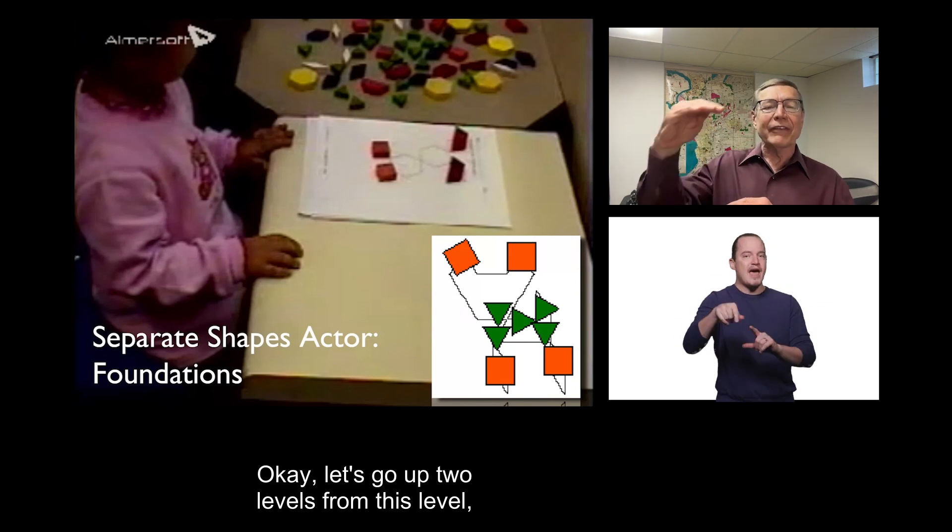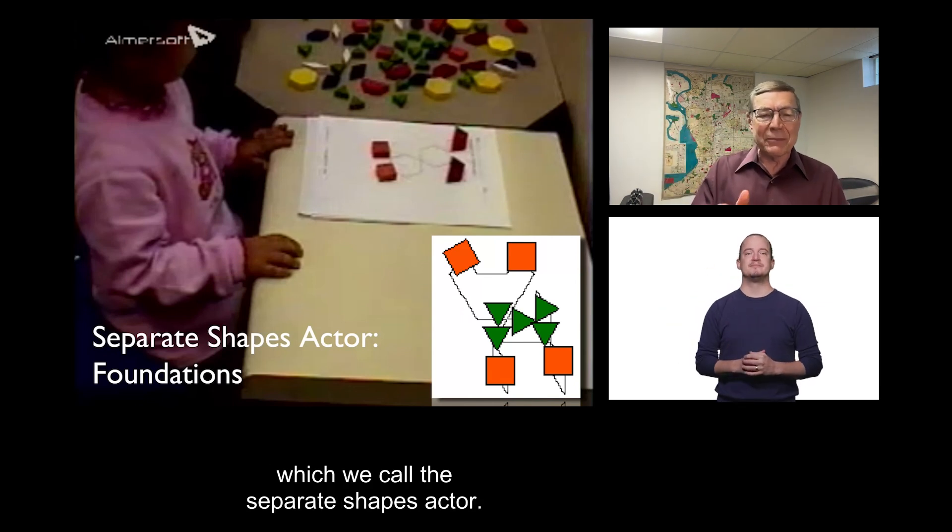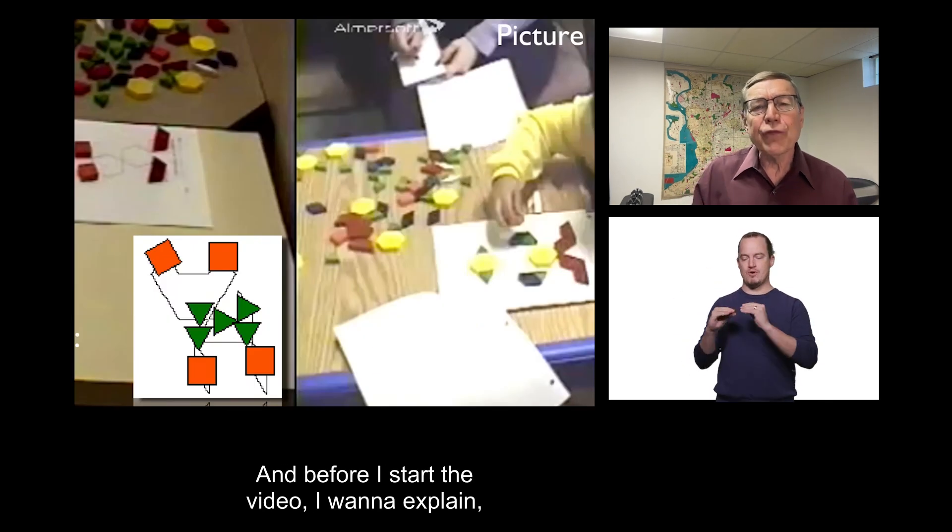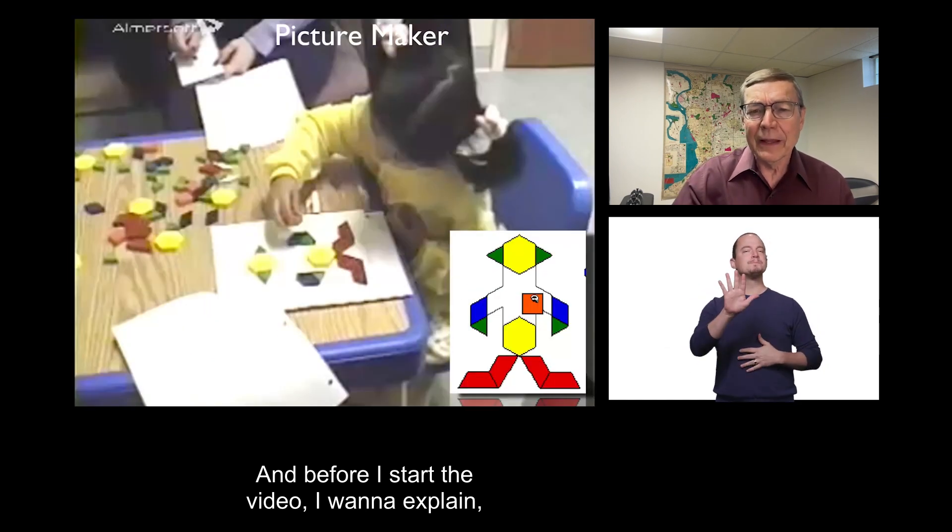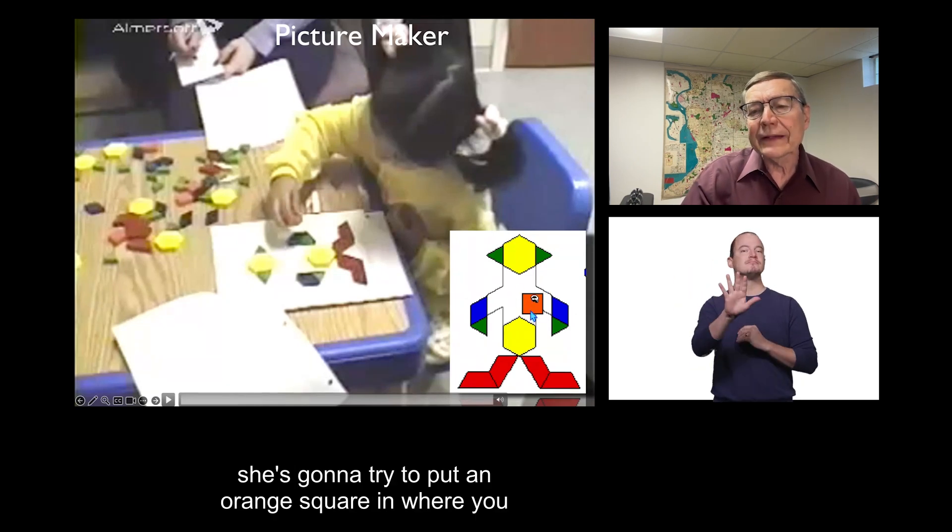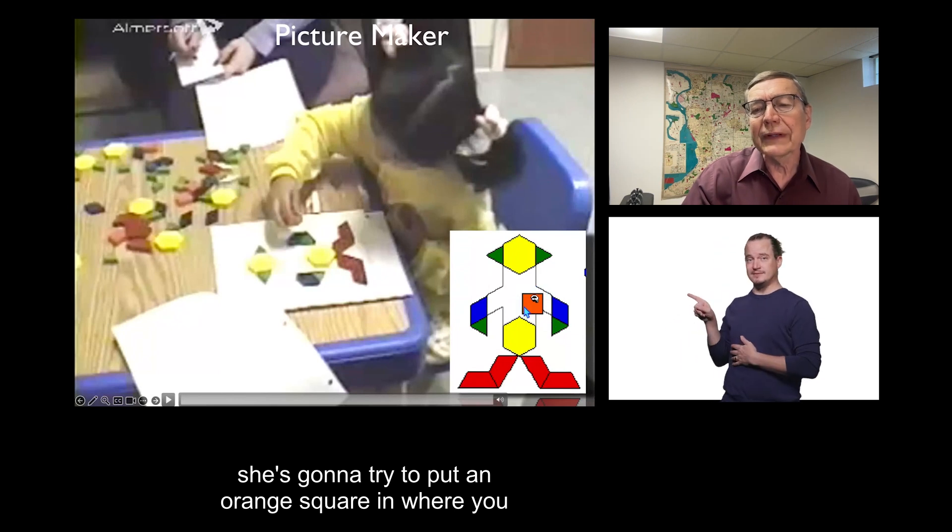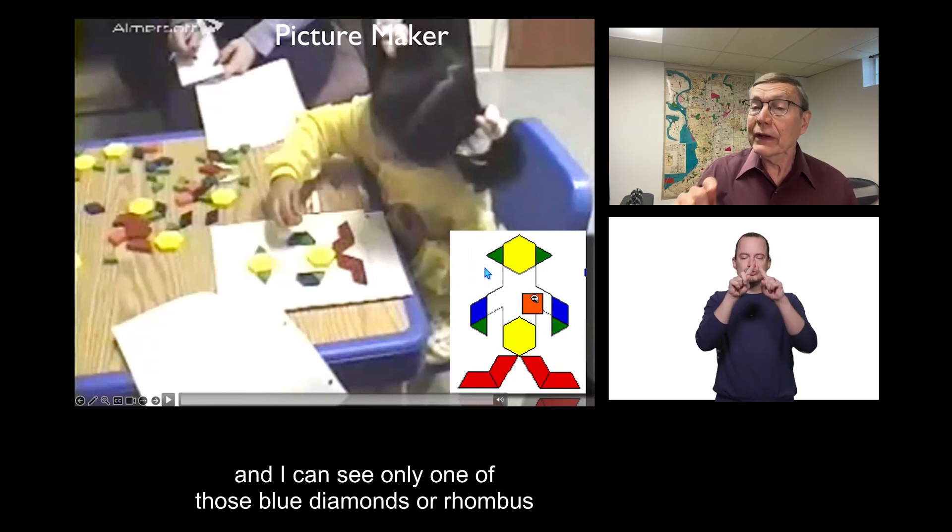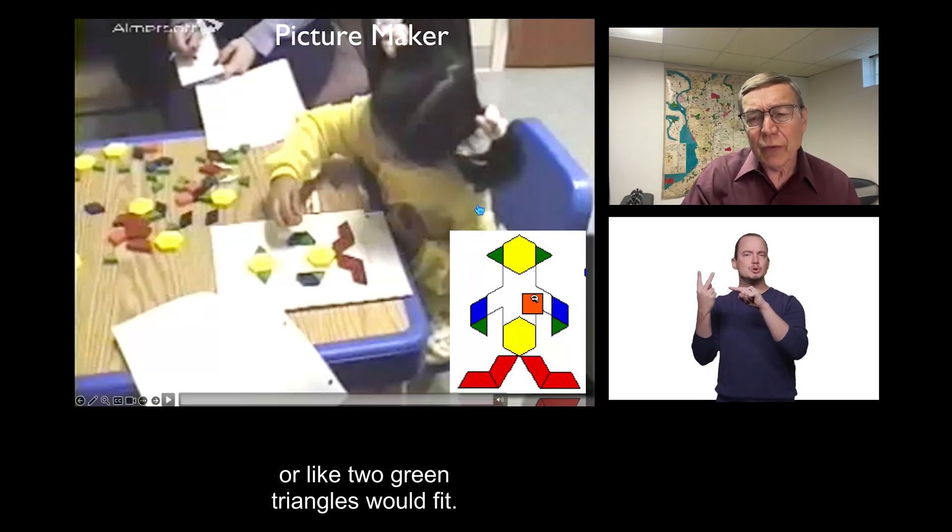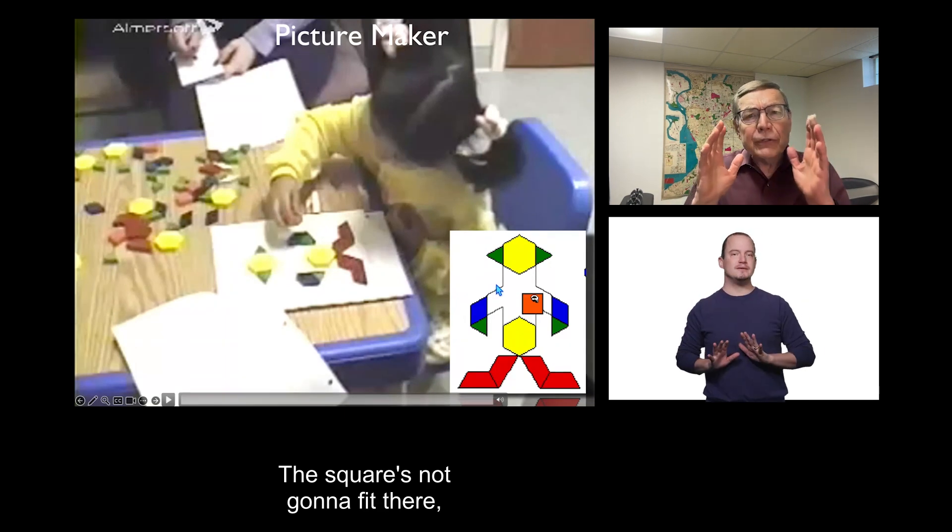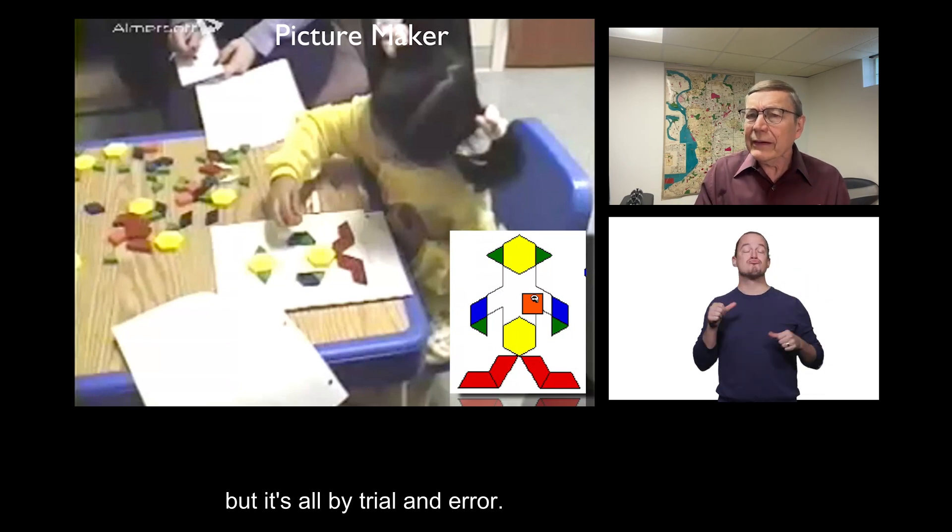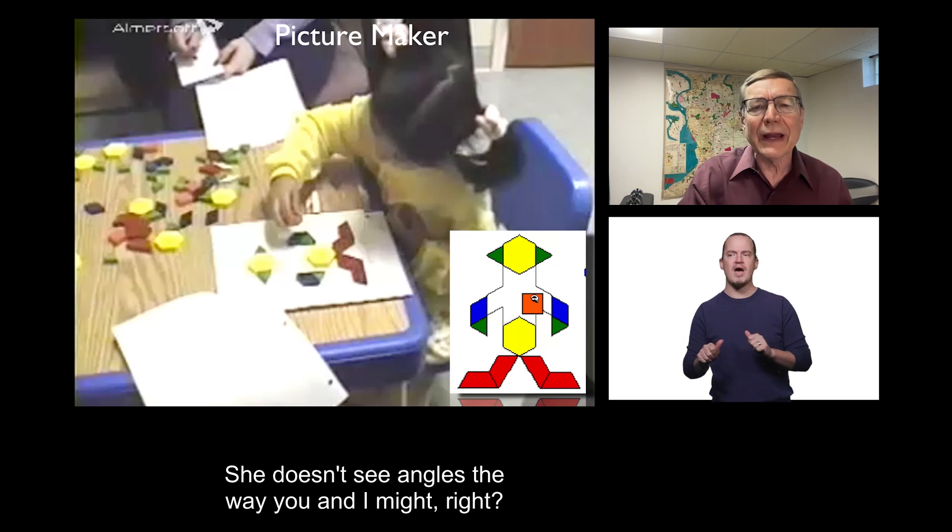Okay, let's go up two levels from this level, which we call the separate shapes actor. It's a foundational level. Two levels up. And, before I start the video, I want to explain, because this goes pretty fast. If you look at the lower right here, she's going to try to put an orange square in where you and I can see only one of those blue diamonds or rhombuses or two green triangles would fit. The square's not going to fit there. But, she's at a level where she can do the puzzle, but it's all by trial and error. She doesn't see angles the way you and I might.